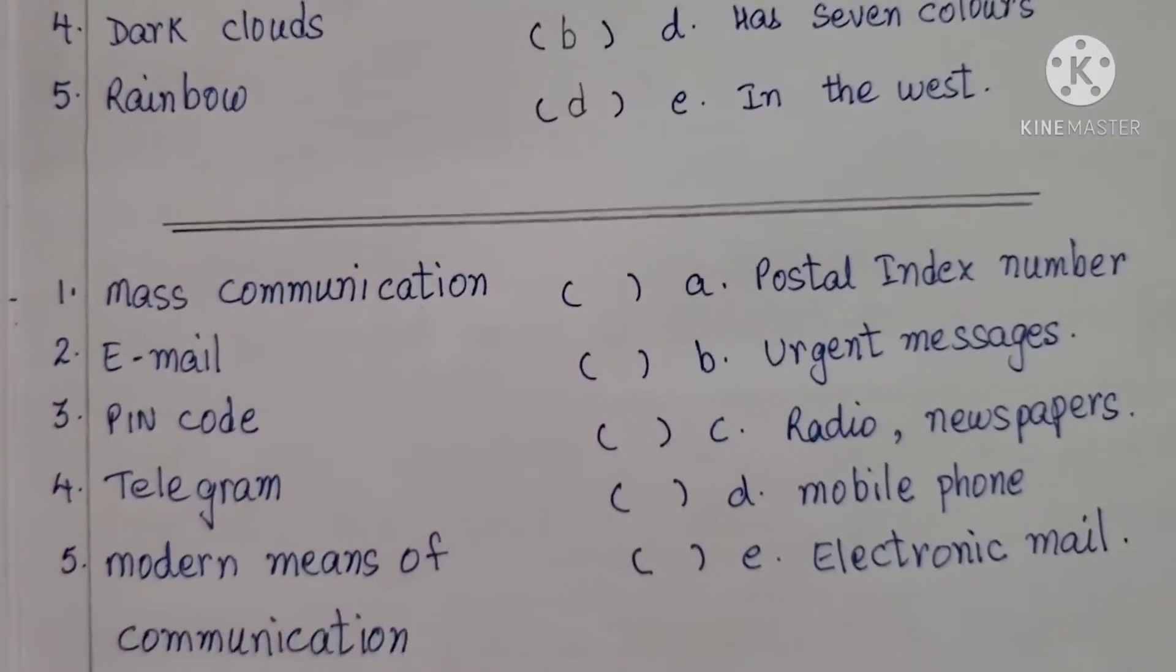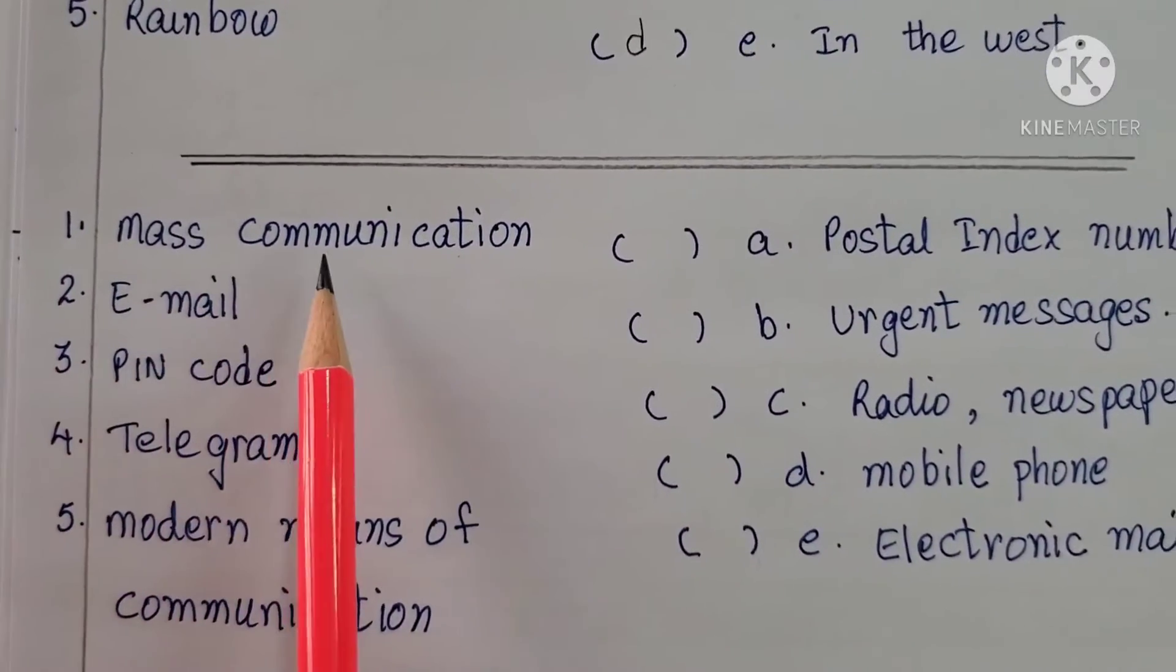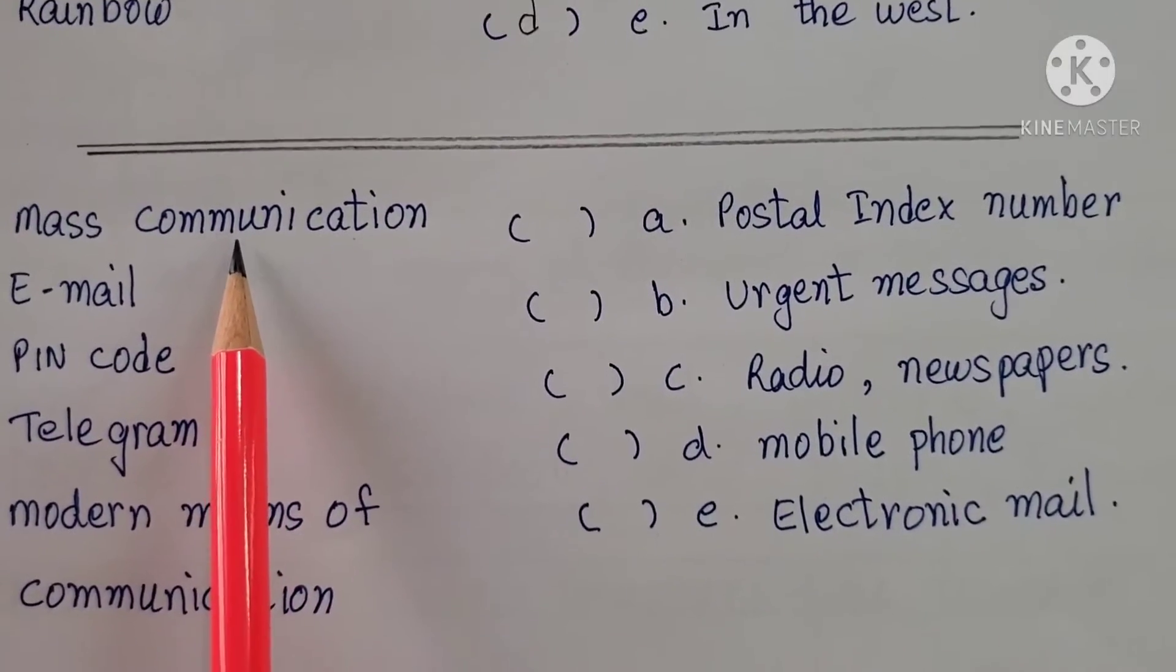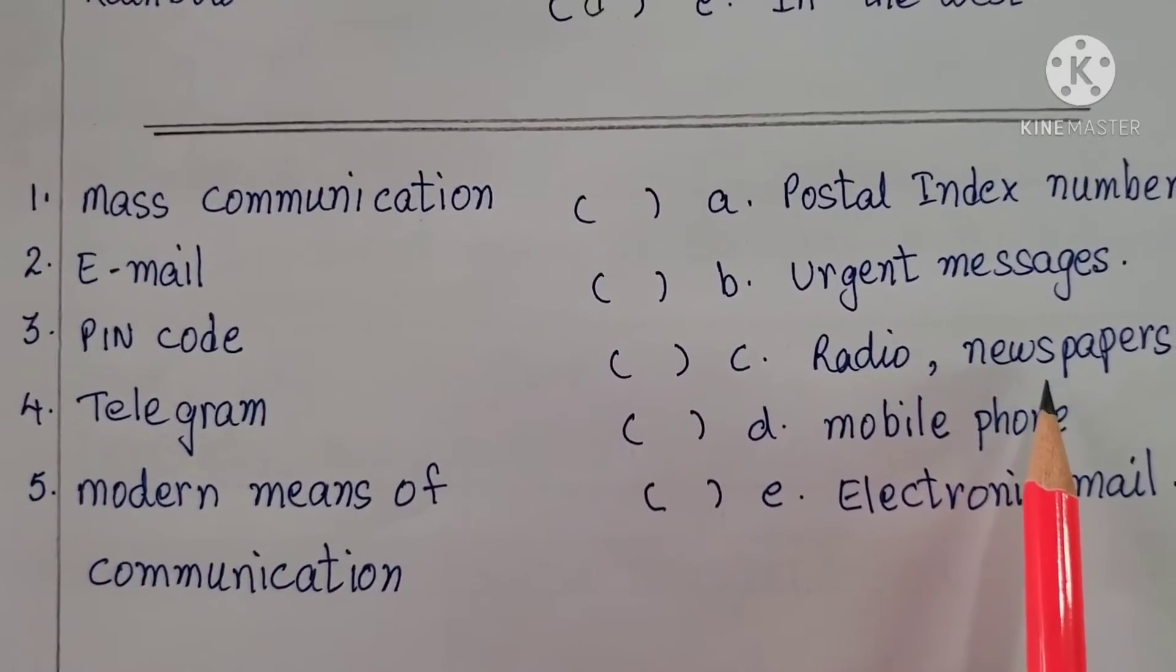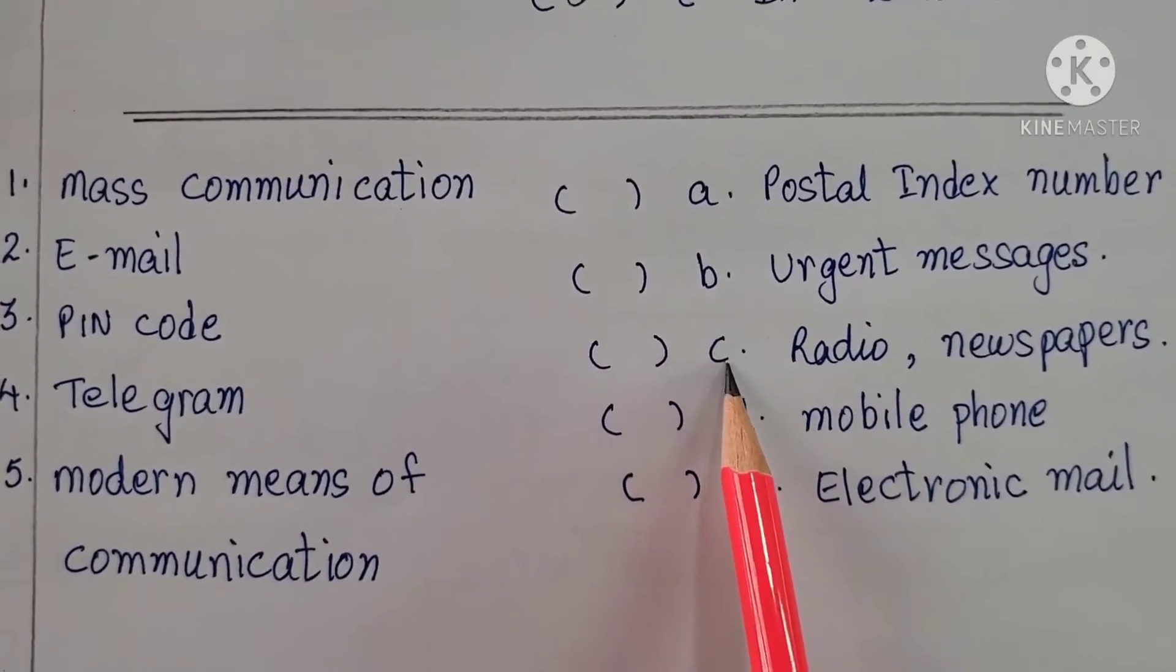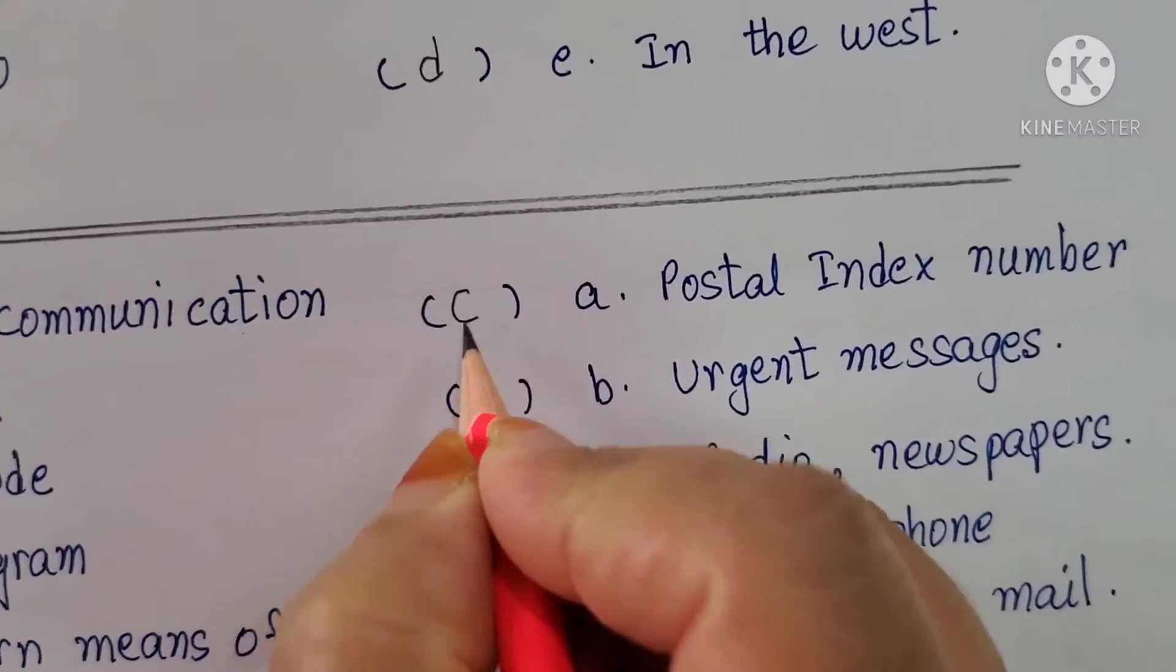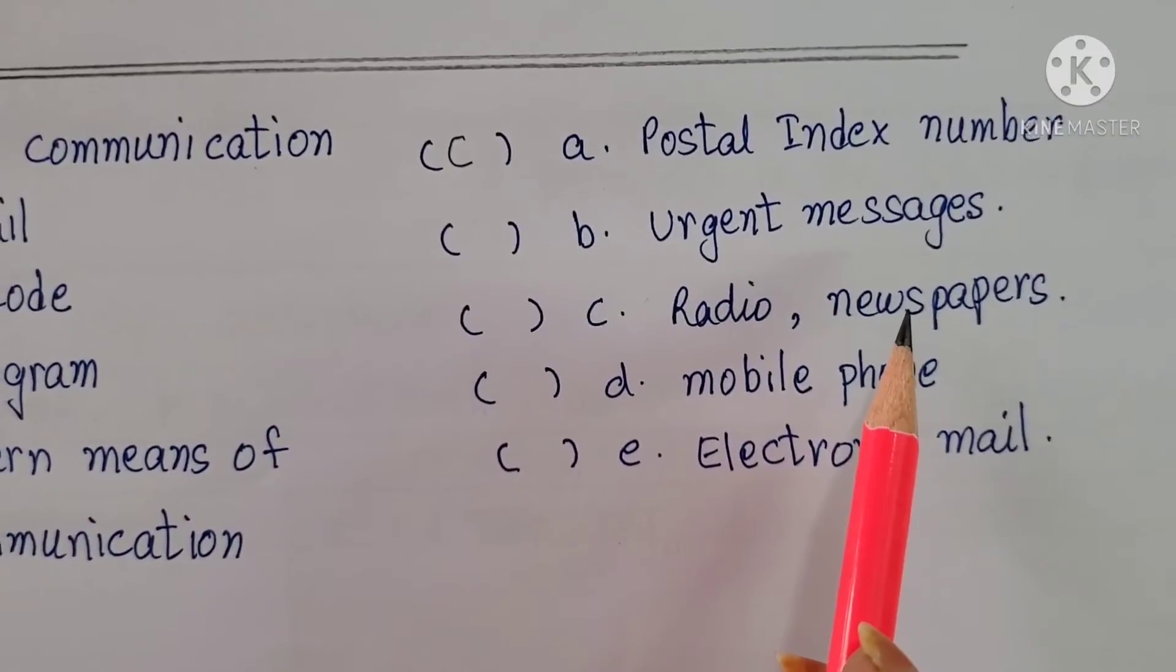Now comes the second one. First one is mass communication. What is it? It is radio and newspaper. So which alphabet is here? C. So you all need to write here C. Mass communication, radio and newspapers.